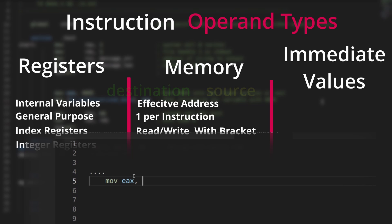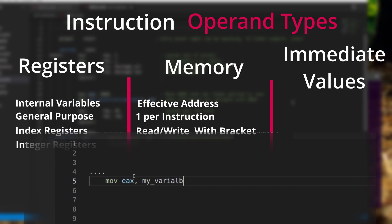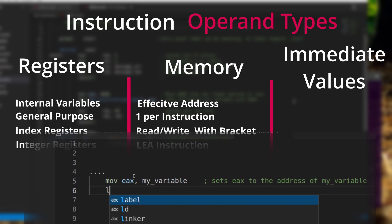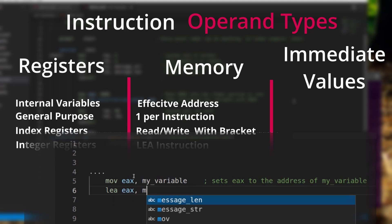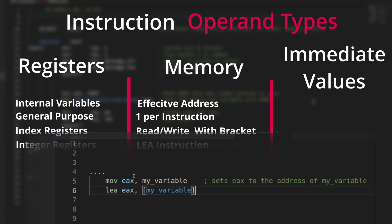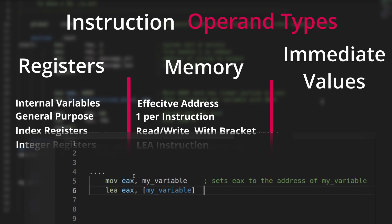If we wish to get the address of a variable, we simply use one of the following forms. Using the load effective address instruction means we wish to read and move the address of my_variable into the register RAX.